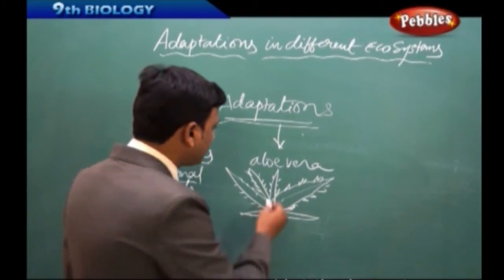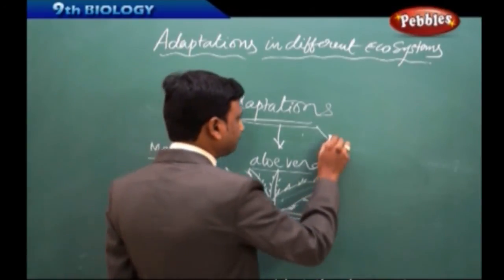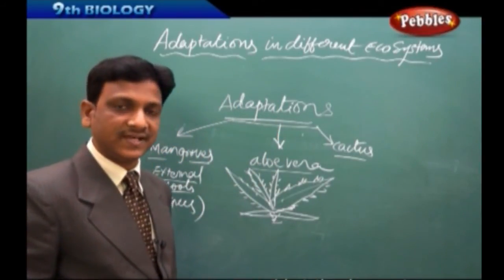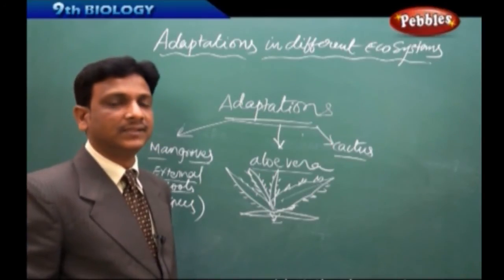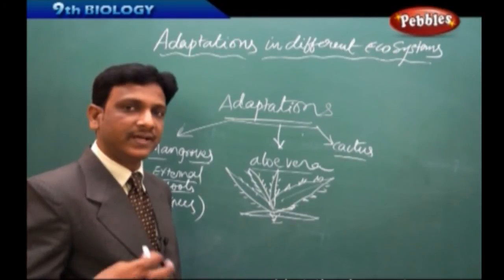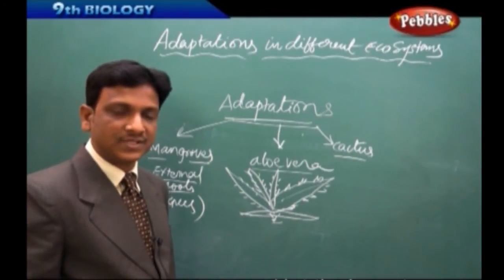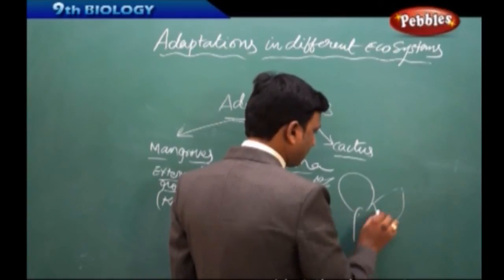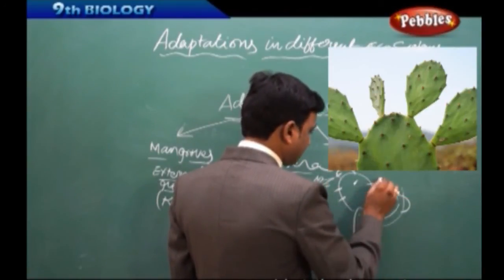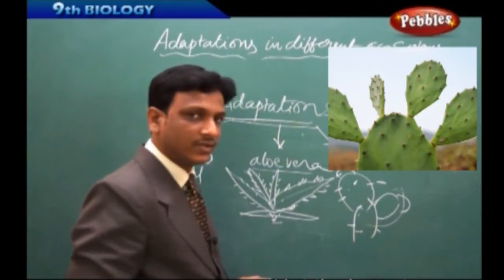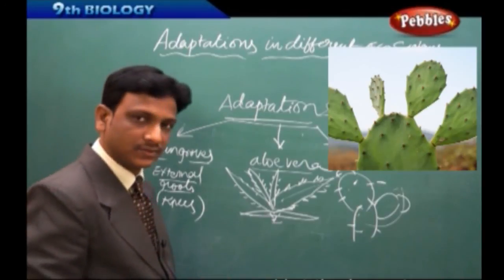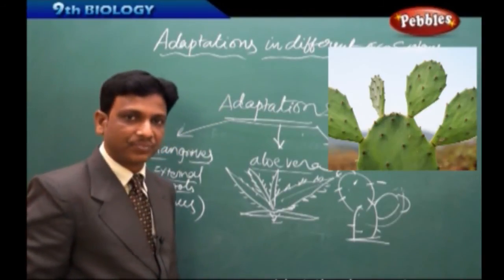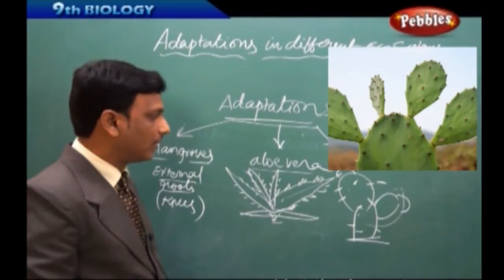Aloe vera shows adaptation through its succulent stem. Similarly, cactus also has a succulent stem and its leaves are modified to spines. These spines also protect the plant from being eaten by animals. The stem is fleshy and stores water, and leaves are reduced to spines to reduce water loss. Plants that have succulent stems and leaves modified to spines are called xerophytes.